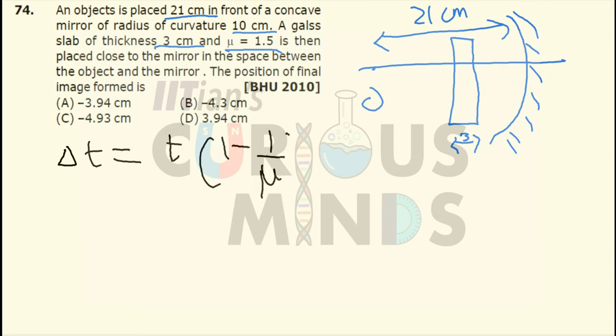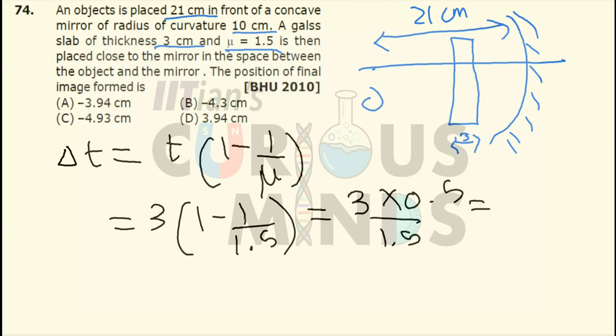t over here is equal to 3 cm, 1 minus 1 by μ. Refractive index is given as 1.5. So it will be equal to 1.5 minus 1. So it will be equal to 0.5 divided by 1.5. So it will be equal to 1 cm.